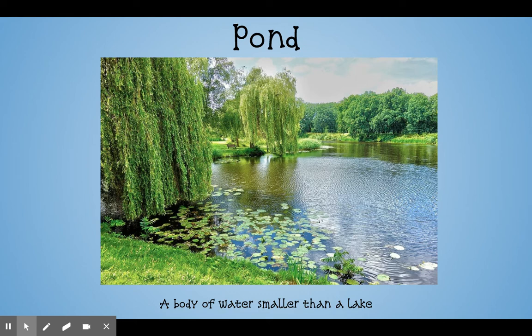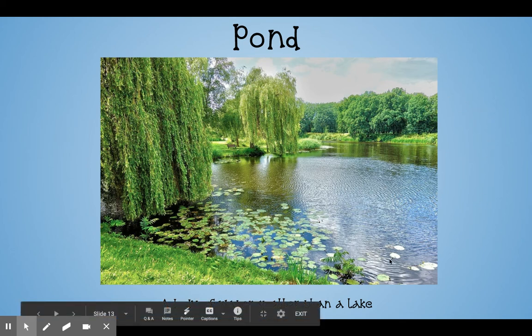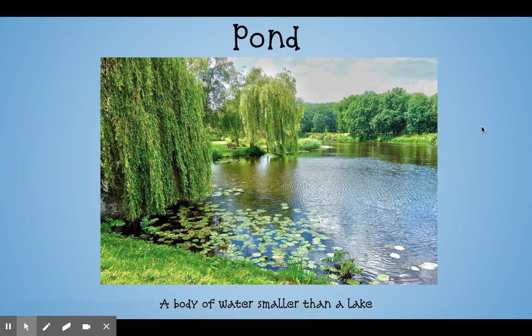Pond. A pond is a body of water smaller than a lake. Ponds are usually a lot smaller — a lot of times you can see all the way around the pond. A pond is completely surrounded by land, but it's smaller than a lake.